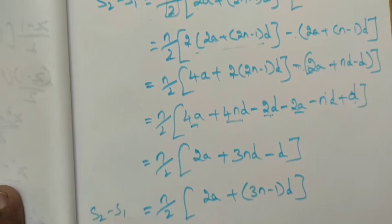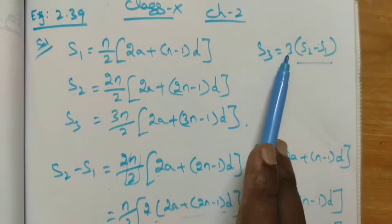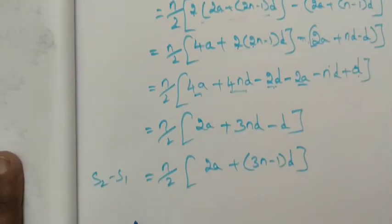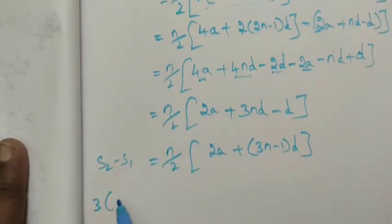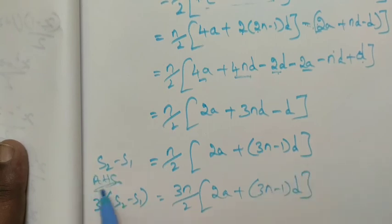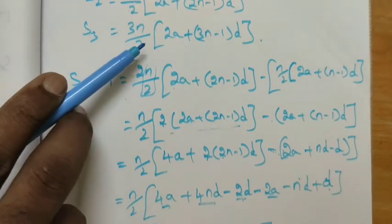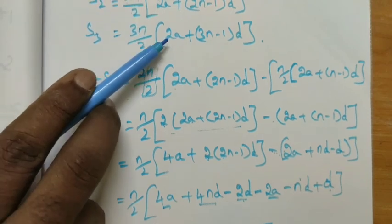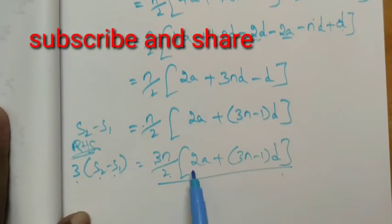This is S₂ - S₁. We will prove that S₃ is 3 times of S₂ - S₁. Multiply by 3: 3n/2[2a + (3n-1)d]. This is S₃: 3n divided by 2, 2a + (3n-1)d.